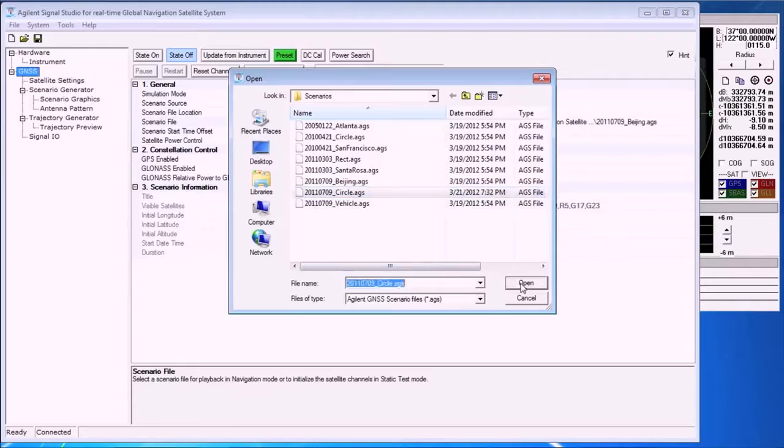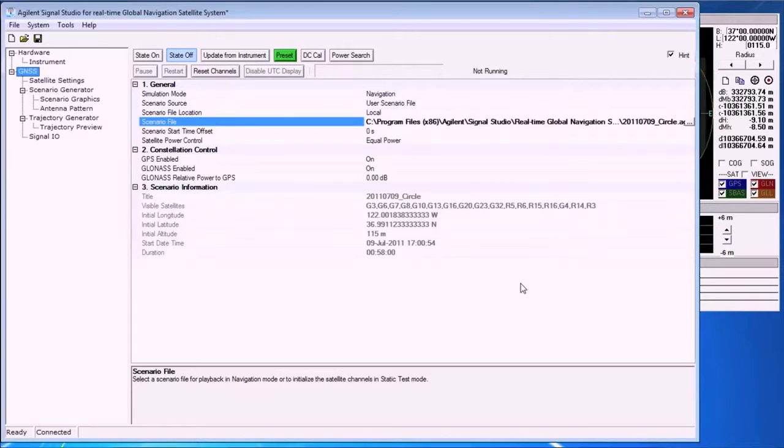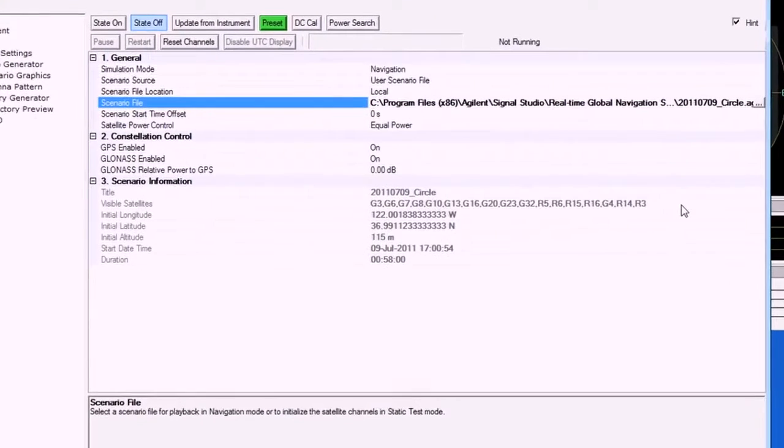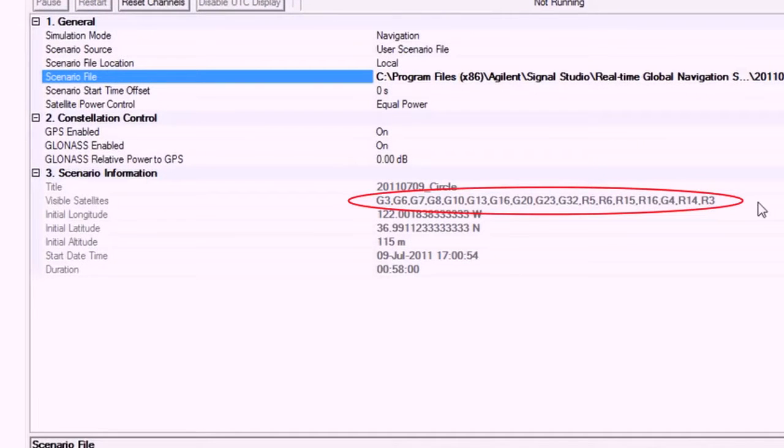In this example, we have selected a scenario file simulating someone driving along a circular path. This particular scenario includes 11 GPS and 6 GLONASS satellites.